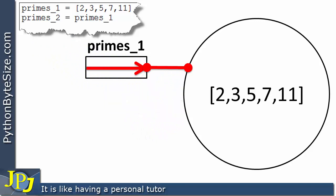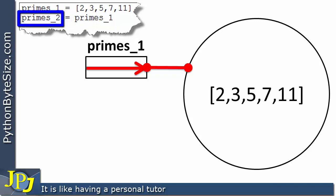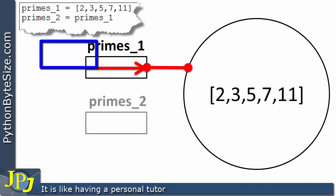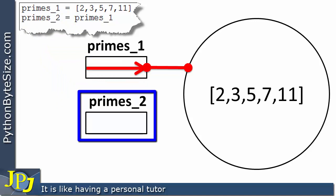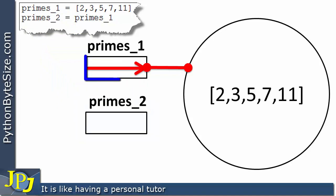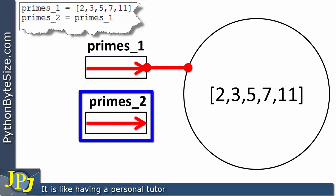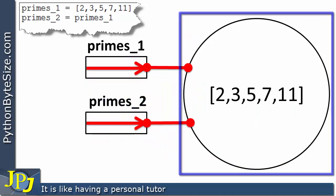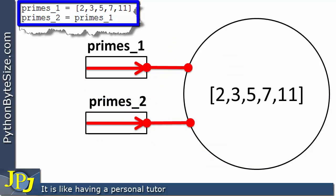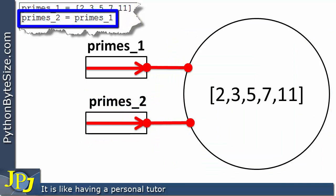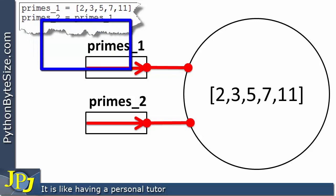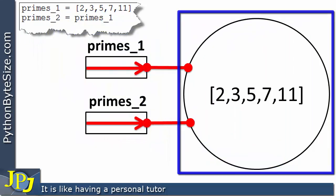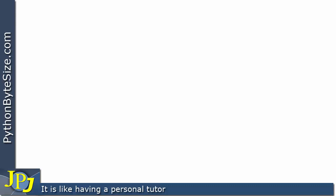What happens on the second line is the name `primes_one` is assigned to this new name, and the arrow is copied to `primes_two`. So `primes_two` is now bound to the same object. The key point is that these two names are bound to the same object.